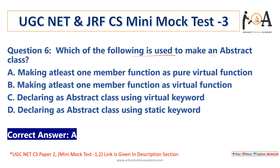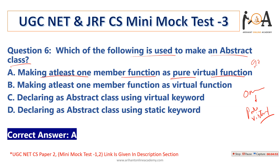The next question: which of the following is used to make an abstract class? In C++, to make an abstract class, at least one member function must be a pure virtual function. If at least one member function is declared as pure virtual, then it qualifies as an abstract class. So option A is the correct answer.